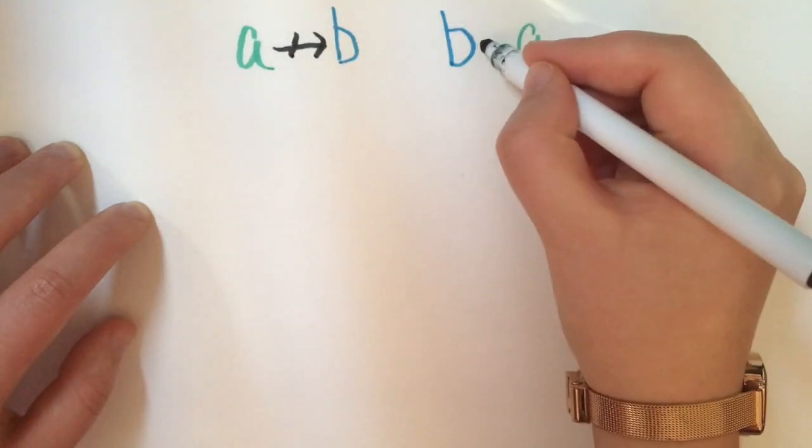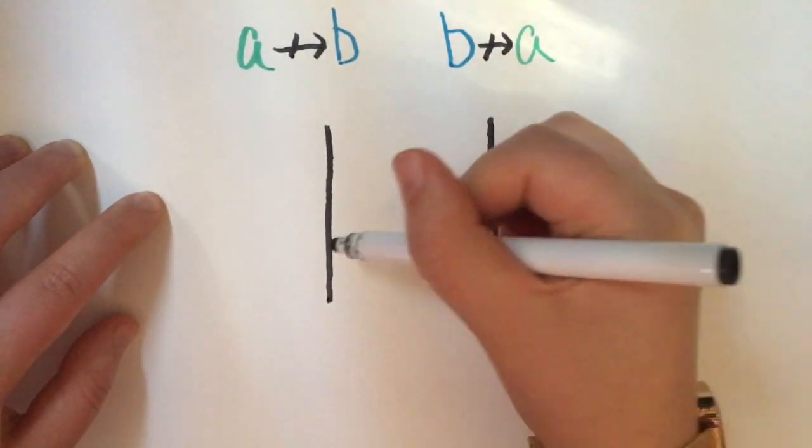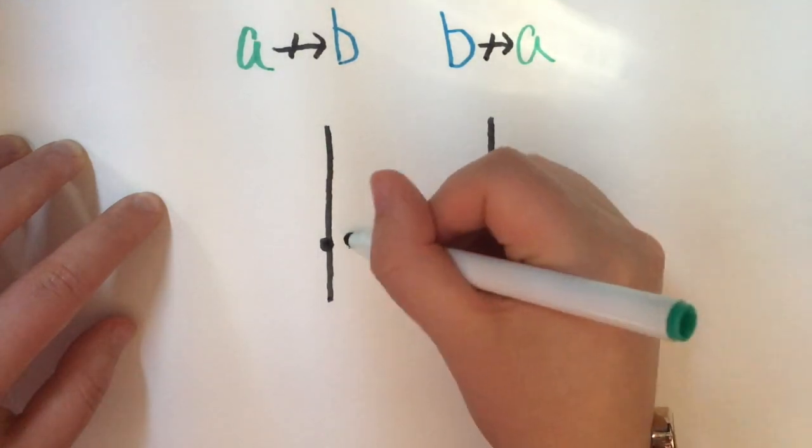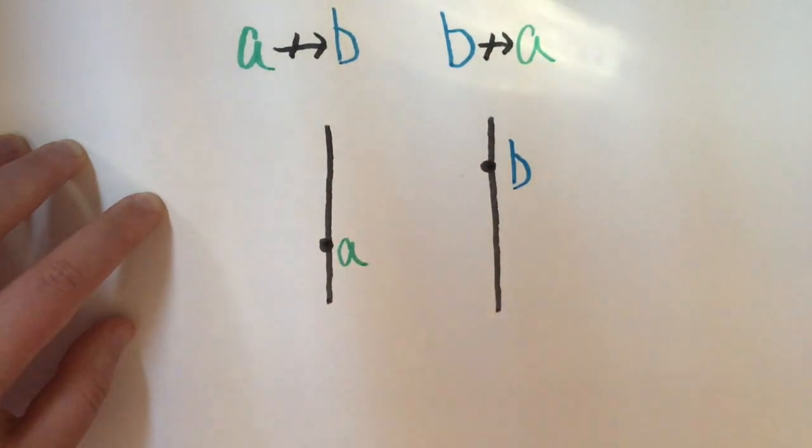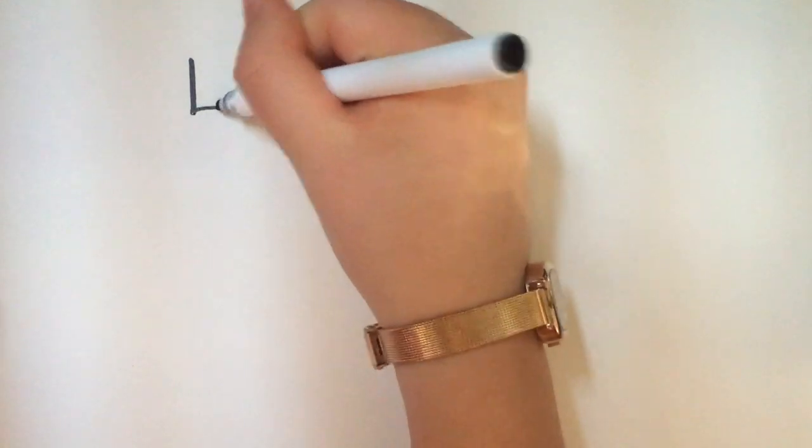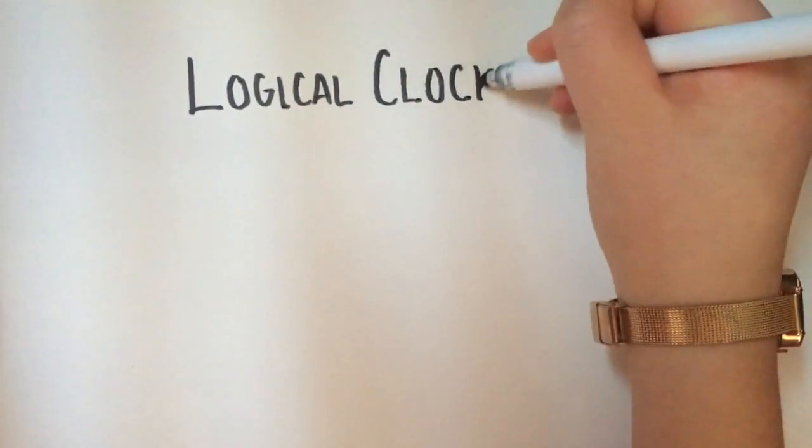We can also derive a causal ordering. If A happens before B, then A can cause B to happen. If A and B are concurrent, they cannot causally affect each other.